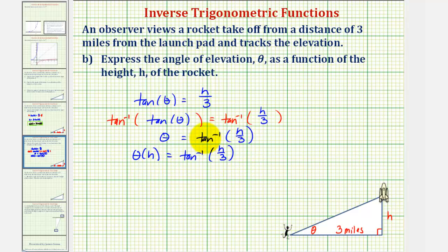But in our online homework, they prefer us to use arctangent rather than inverse tangent. So this would be equivalent to θ(H) equals arctangent of H divided by three.